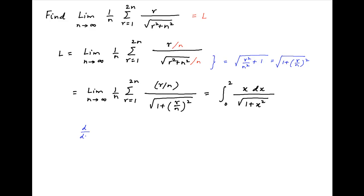Note that the derivative of square root of 1 plus x squared is equal to 1 upon 2 times square root of 1 plus x squared, times the derivative of 1 plus x squared, which is 2x. The two cancels and this is equal to x upon square root of 1 plus x squared.